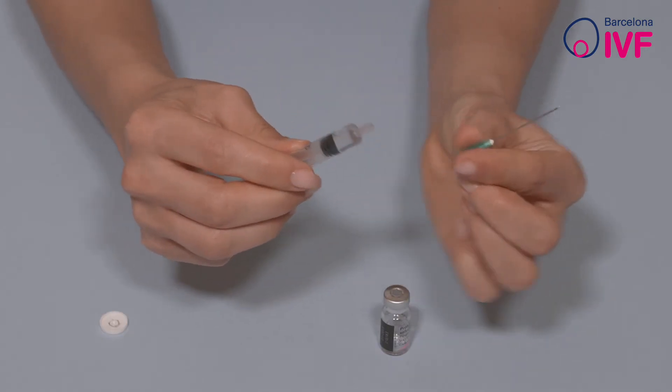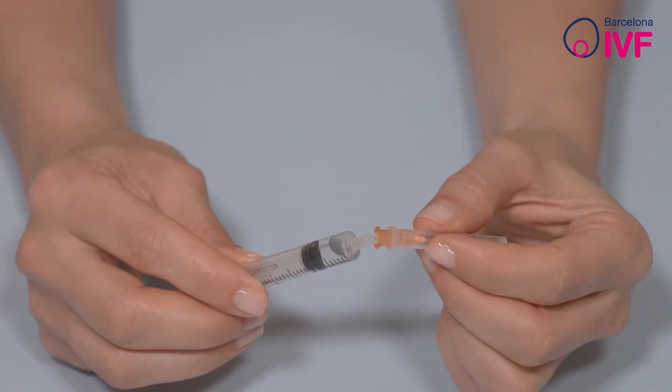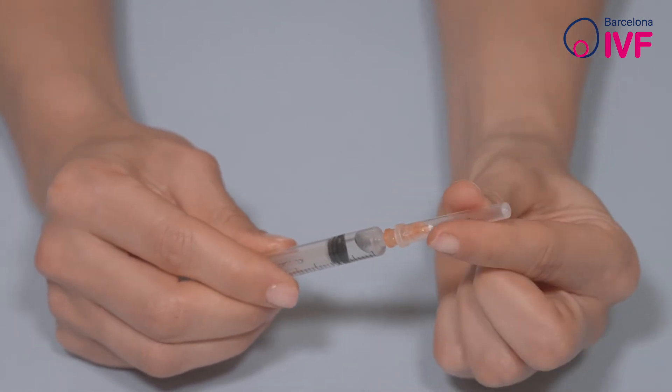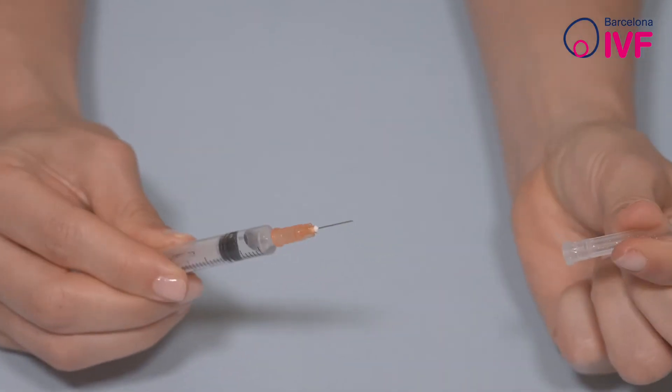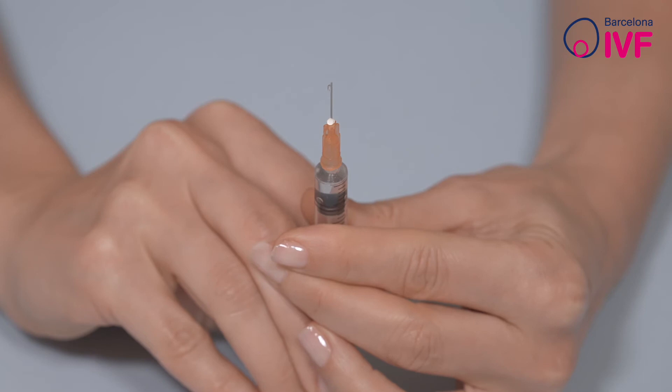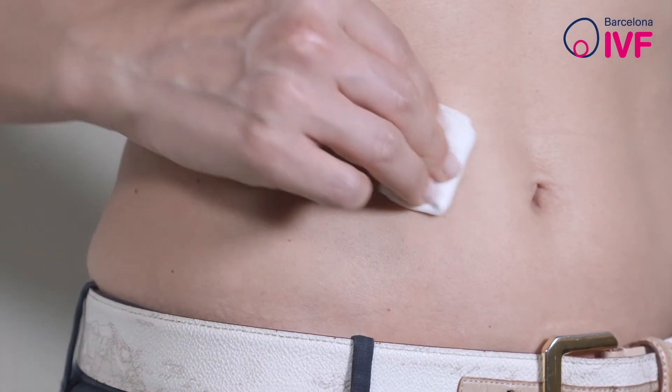Remove the large intramuscular needle and change it to the smaller one for subcutaneous injection. Remove the needle guard. Push the plunger a little to bleed the needle until a droplet comes out. Everything is now ready for administration.